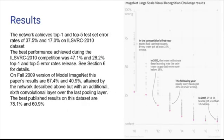Finally, as you can see in the results, the network achieves top 1 and top 5 test set error rates of 37.5% and 17% on the ILSVRC 2010 dataset. The best performance achieved during the competition was 47.1% and 28.2% in the earlier release. On Fall 2009 version of ImageNet, this paper's results are 67.4% and 40.9% attained by network described above but with an additional 6th convolutional layer over the last pooling layer. The best published results on this dataset are 78.1% and 68.9%. Thank you.